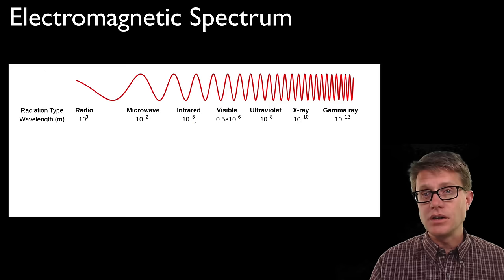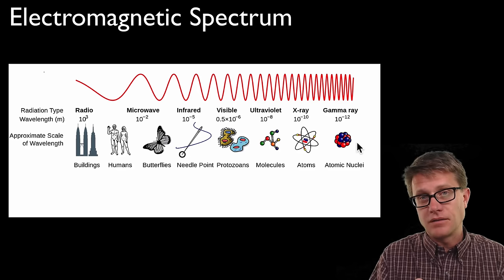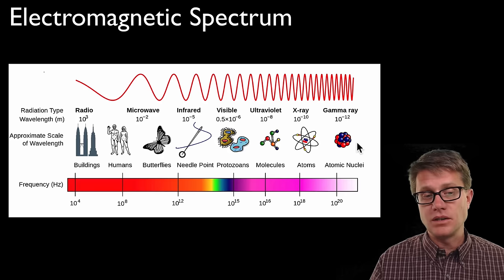If we put them along a spectrum, they decrease in wavelength as we move towards gamma rays. To give you a sense of scale, radio waves have wavelengths around the size of a building, but gamma rays are down around the size of a nucleus. There's this inverse relationship—as we increase wavelength, we decrease frequency.